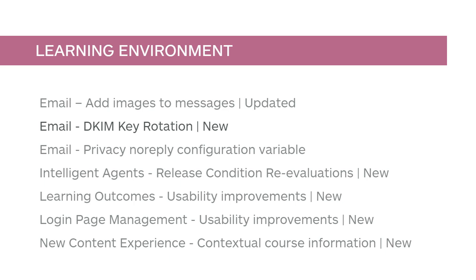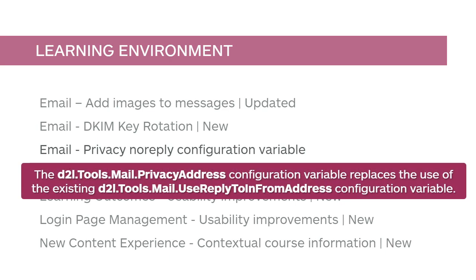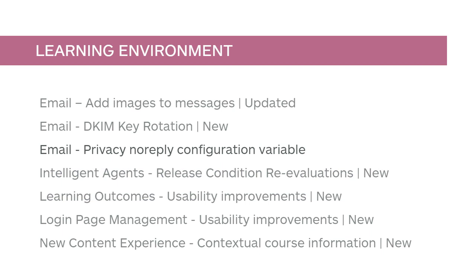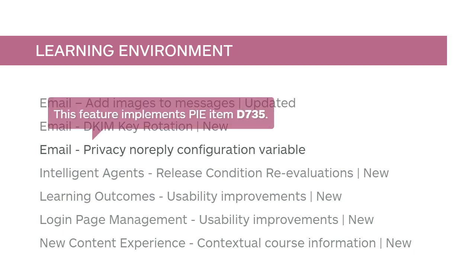Email now implements a DKIM rotation policy with rotation happening on 6-month intervals. The D2L Tools Mail Privacy Address configuration variable replaces the use of the existing D2L Tools Mail Use Reply To and From Address configuration variable for hiding usernames in generated email messages. This new configuration variable supports and conforms to DMARC protocol. This feature implements PI Item D735.